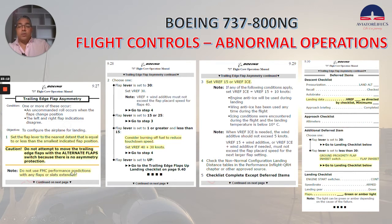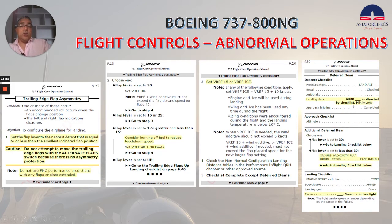Do not use FMC performance predictions with any flaps or slats extended. In step two, if the flap lever is set to one or greater and less than 15: consider burning off fuel to reduce touchdown speed. Set V-Ref 40 plus 30 knots, then continue with the checklist. In the deferred items, VREF as directed by the checklist — set the minimums. If the flap lever is set to less than 30, ground proximity flap inhibit switch goes to flap inhibit. The landing checklist shows flap setting — green or amber light. The light can be green or amber depending on the cause of the failure.